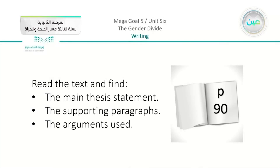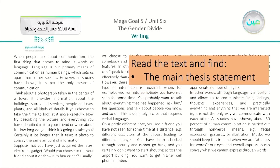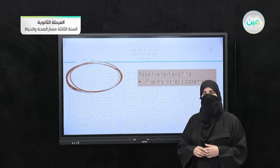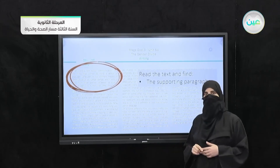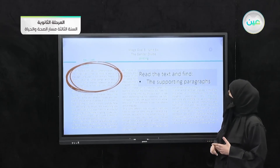Now please open your books on page number 90. On page number 90, we have the instructions to read the text and find the main thesis statement, the supporting paragraphs, and the arguments used. So we have the complete passage here. We are asked first to read the text and find the main thesis statement. We know that the main thesis statement will be at the very beginning — in the first paragraph, which is the introduction.